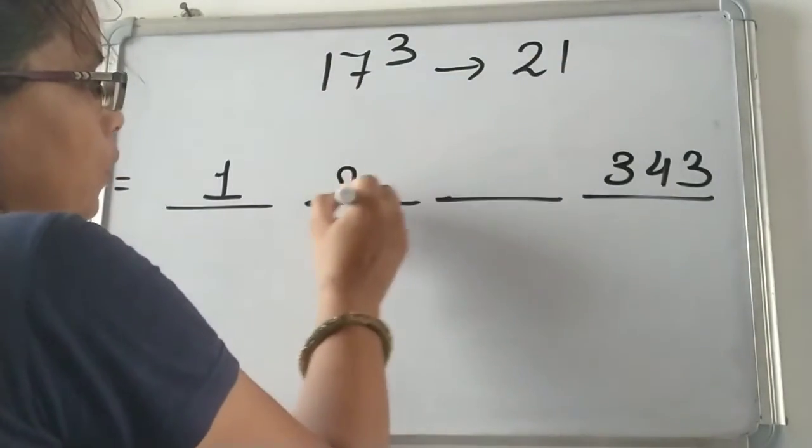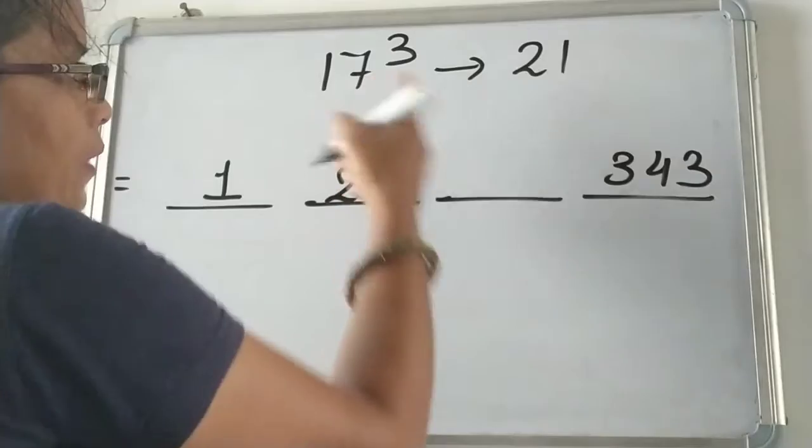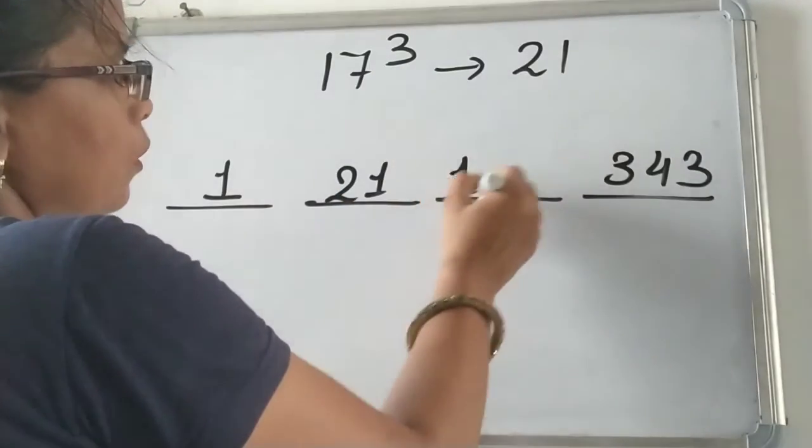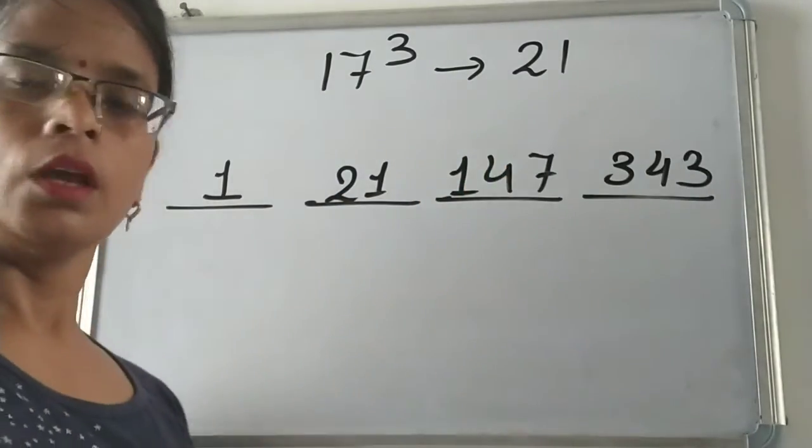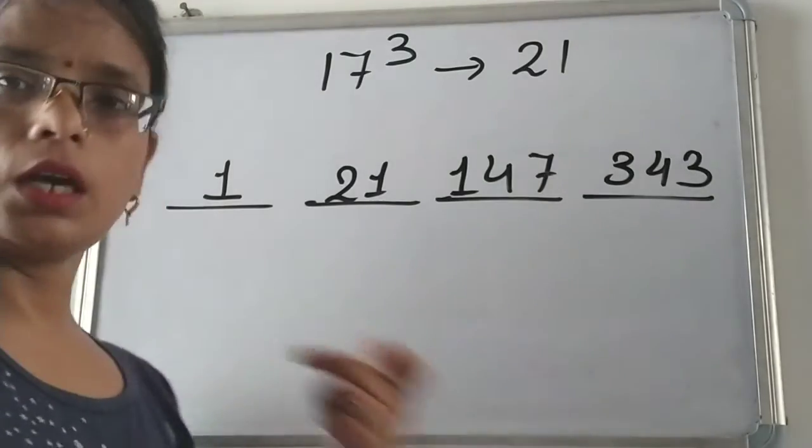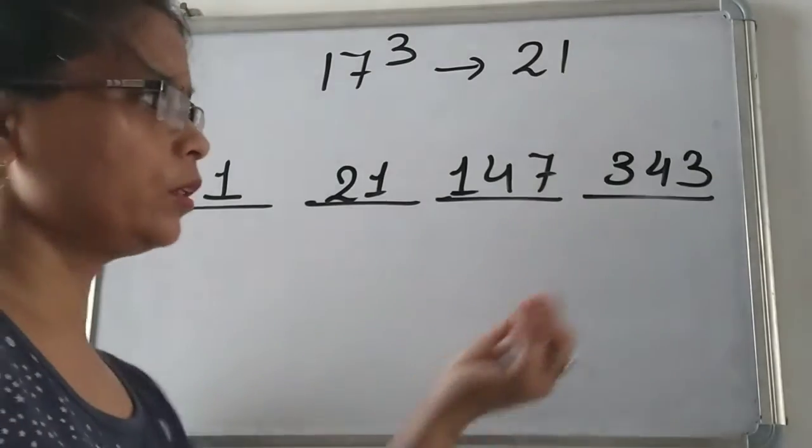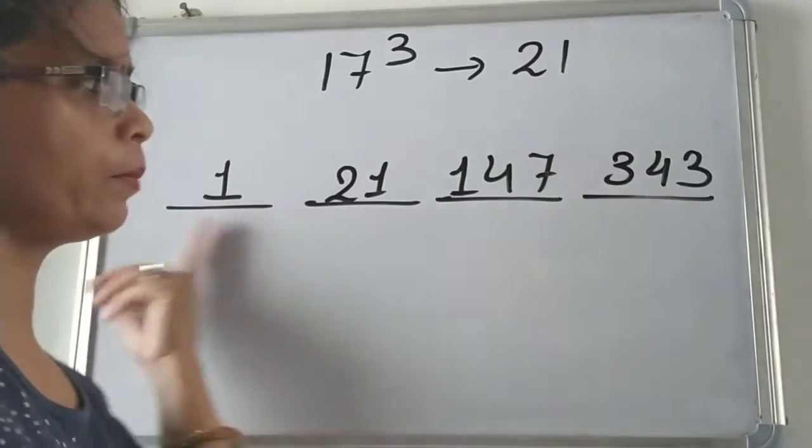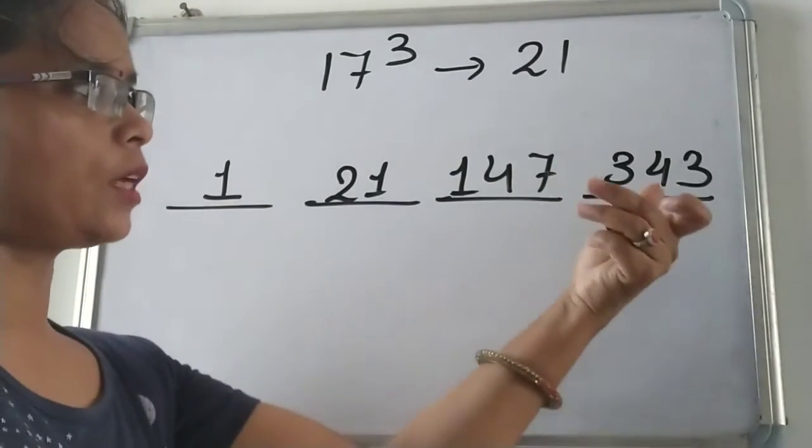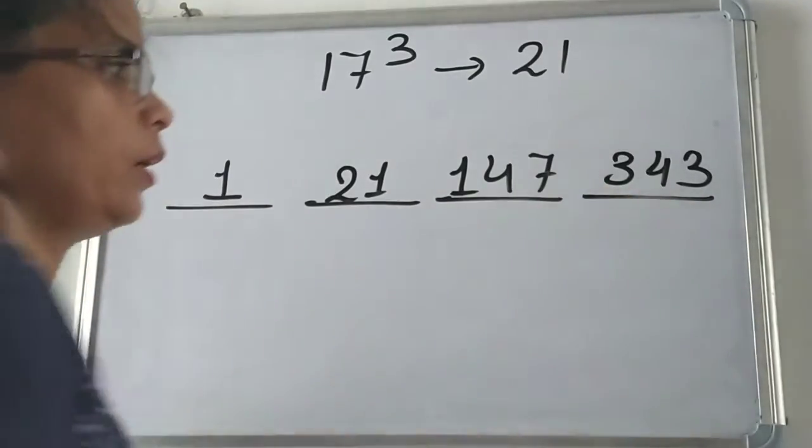21 times 1 is 21, and 21 times 7 is 147. Now to get the answer we will concentrate on the unit digit of these numbers and we will start from this side. Let's do it. 3, we will take 3 here.